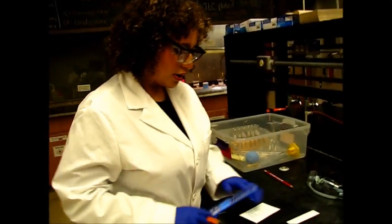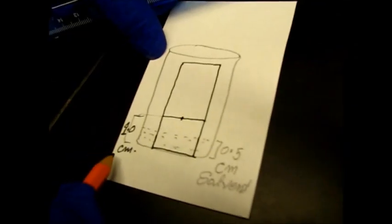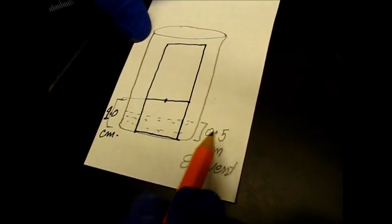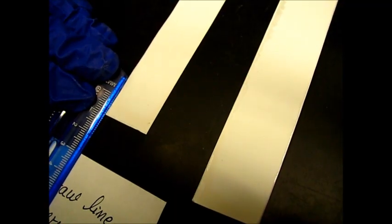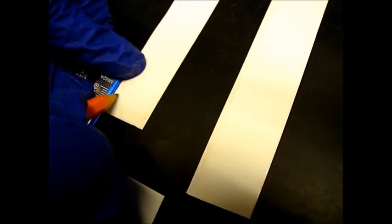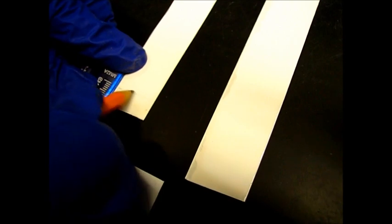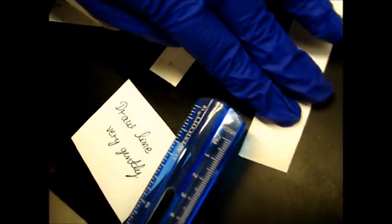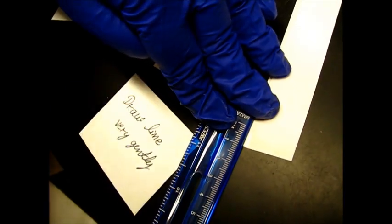Now we'll use the TLC plates. For our TLC, we want the origin of our sample to be at one centimeter, so it can be above the point five centimeter solvent line. We have to draw our line very gently. With our ruler, we're going to measure out one centimeter approximately and very gently draw our line. And right in the middle, we're going to mark our spot where our sample will be. We're going to do the same thing for all of our TLC plates.